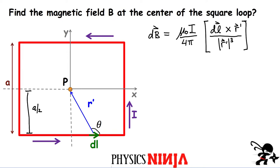Look at the Biot-Savart law. We have a couple of terms here. Mu zero is simply a constant, 4 pi is a constant, I is the magnitude of the current, and then you're left with this term in the square bracket. DL is a vector going along the direction of the current — I've illustrated one of those little vectors here, but I can go anywhere on that loop and define another vector DL. Here's another little vector DL, and this gives me the contribution to the magnetic field produced by this tiny element of current.